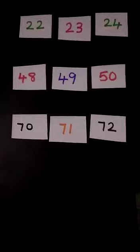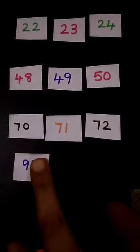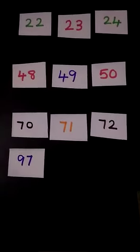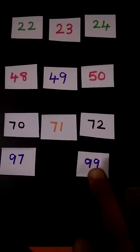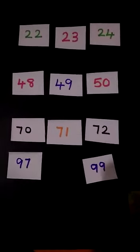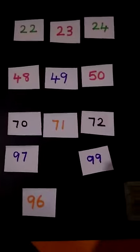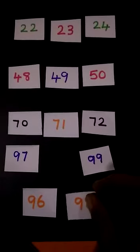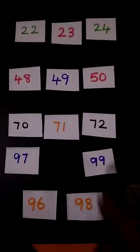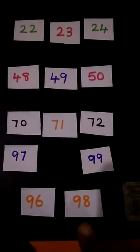We will go for the next number. Which number is this, children? 97, here 99. So now I am showing two different numbers. You have to select the correct number which will come in between 97 and 99. This is 96, this is 98.